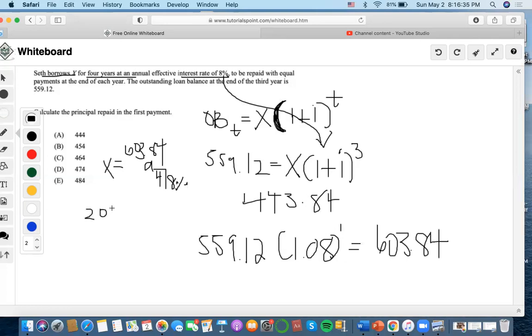This uses the concept that payment equals interest plus principal. They gave us an effective interest rate of 8%, so let's multiply this loan by 8% because that's what we usually do with effective interest rates to find the amount of interest we need to pay.